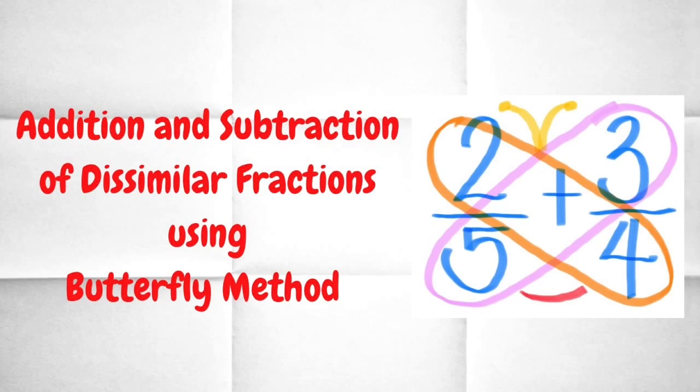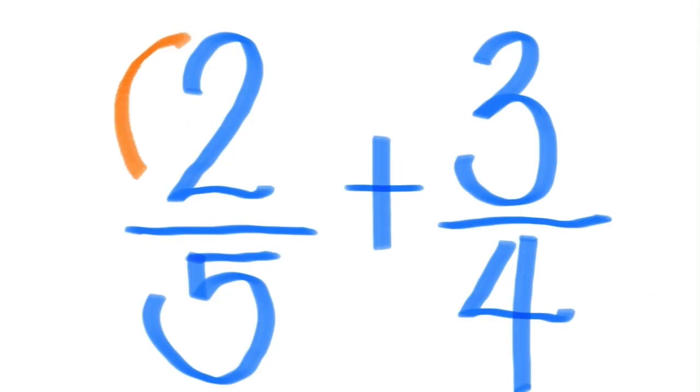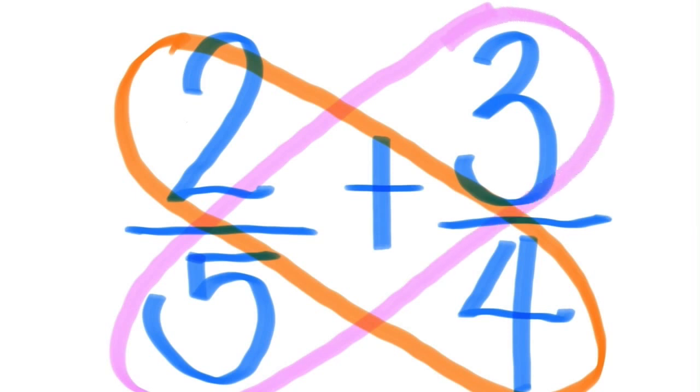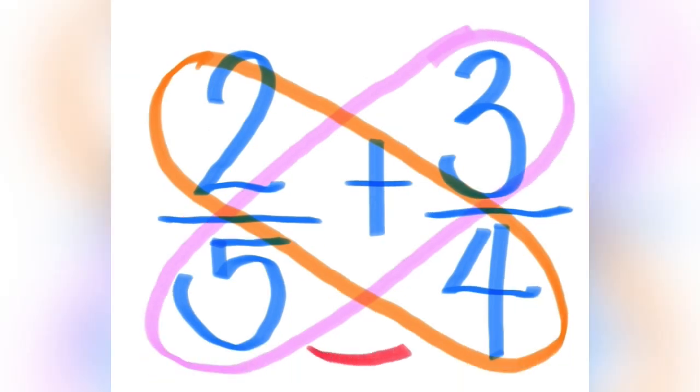The butterfly method helps you solve the easier way than the long method by getting the least common denominator through least common multiples. It is called butterfly simply because you just draw an image of a butterfly.